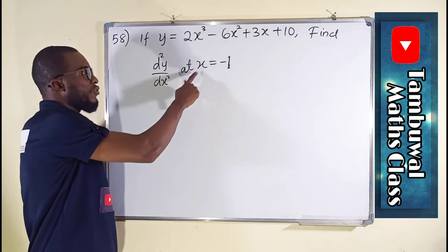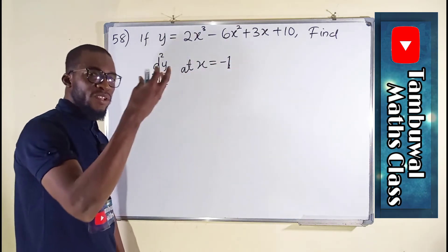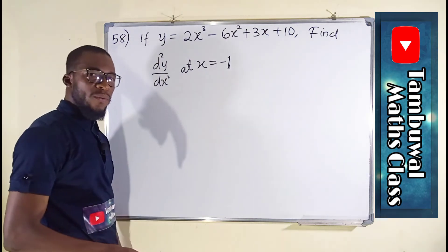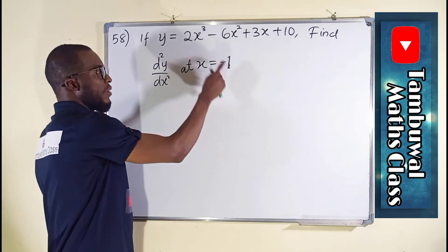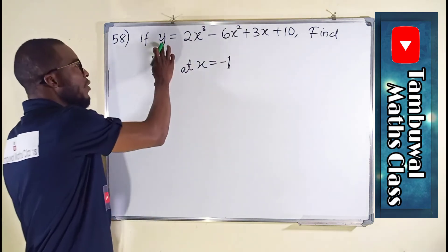So we are not going to substitute the value of x equal to negative 1 in here. We have to differentiate it the first time and differentiate it for the second time, then we substitute the value of x in that second derivative at x equals negative 1 to obtain our value.